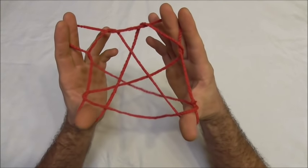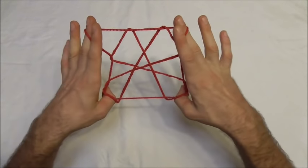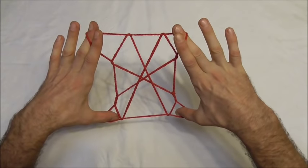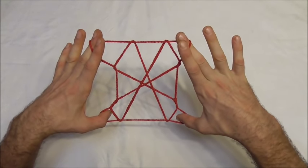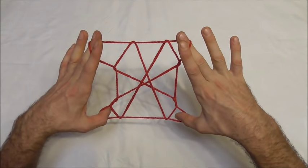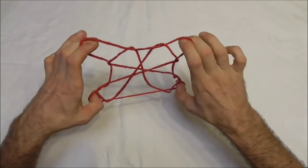Then I want to use my thumbs to curl over that straight string into those little triangles, rotate my hands forwards and I should get the figure, or I can display it by replacing the middle finger loop back onto the pointer fingers.